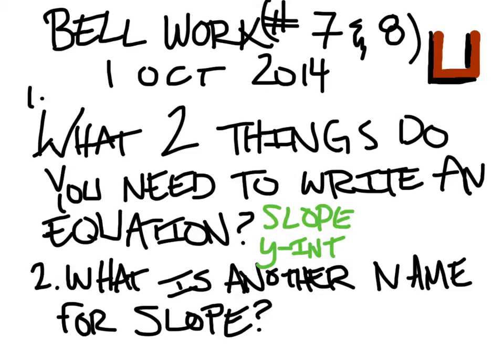All right, what is another name for slope? There are many other names for slope. Olivia? Rate of change. Very good. Rate of change. What's another one? Change in Y and change in X. A rate works, sure. Riley? M. Rise over run works, or the equation.